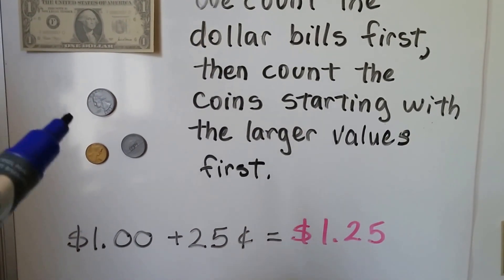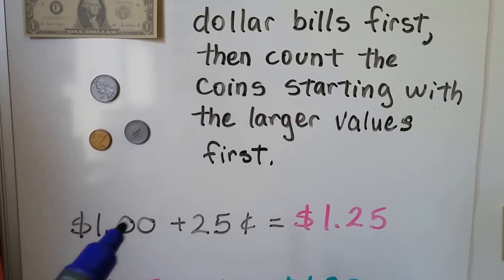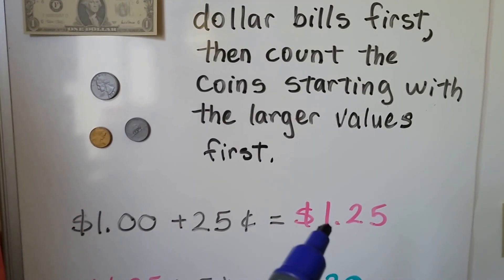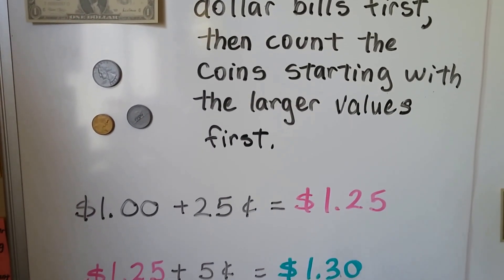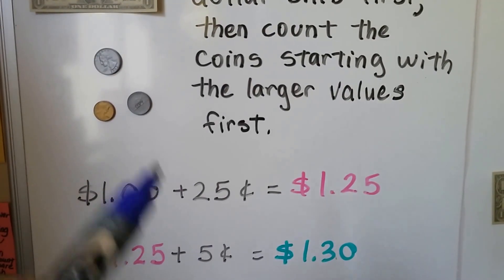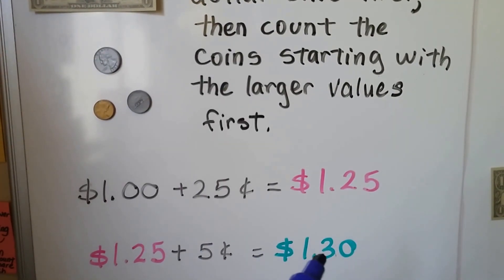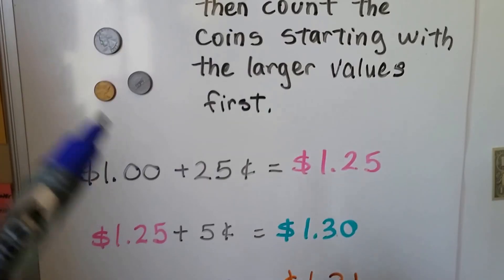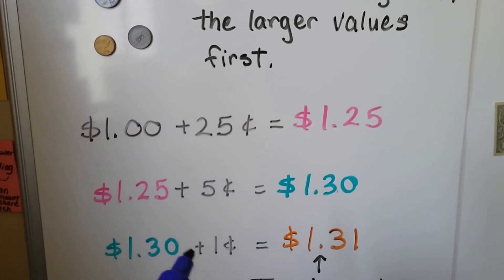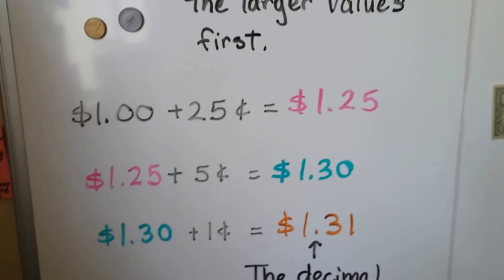We start with the dollar. We add the quarter. That's a dollar plus 25 cents makes a dollar 25 cents. We take the dollar 25 cents and add that nickel and now we have a dollar 30 cents. We add the penny. Now we have a dollar plus 1 cent. That's a dollar 31 cents.